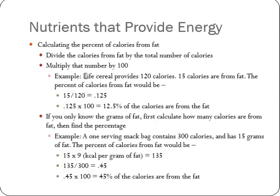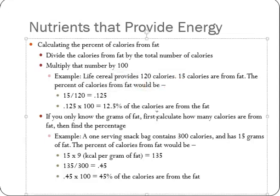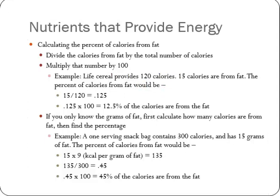For example, Life cereal provides 120 calories and 15 of them are from fat. The answer is simple: take 15 divided by 120, which is 0.125, which is the same as 12.5%. Percent literally means per hundred, so whenever you want to turn a number into a percentage, multiply by 100. So 15 out of 120 is 12.5% of the calories from fat. If you only know the number of grams of fat, just multiply it by 9 and you can figure it out from there.